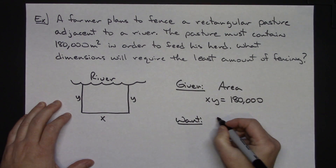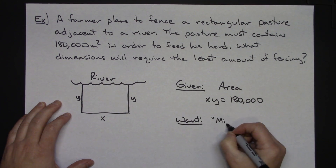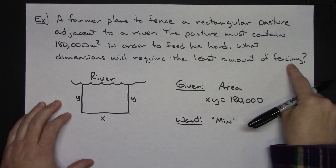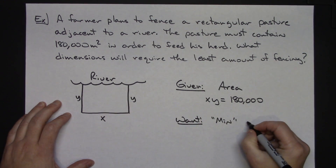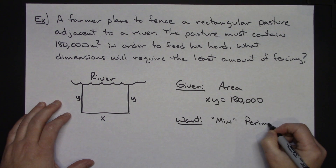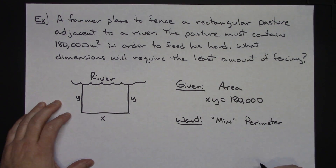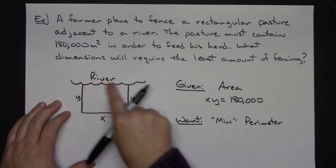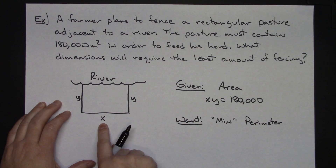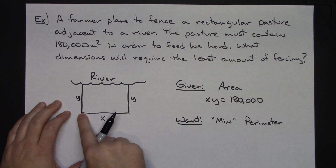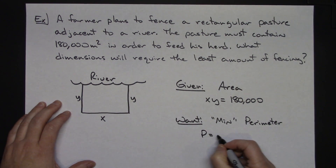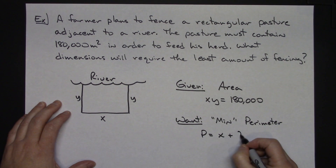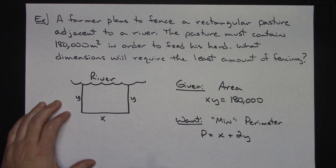What I want is the least amount of fencing, so I want to minimize the perimeter. To come up with an equation for that, I look at the outside edges. The perimeter would be two Y's plus an X, so my perimeter is equal to X plus 2Y. That's all of your setup — once you get that done, you're good to do your six steps.